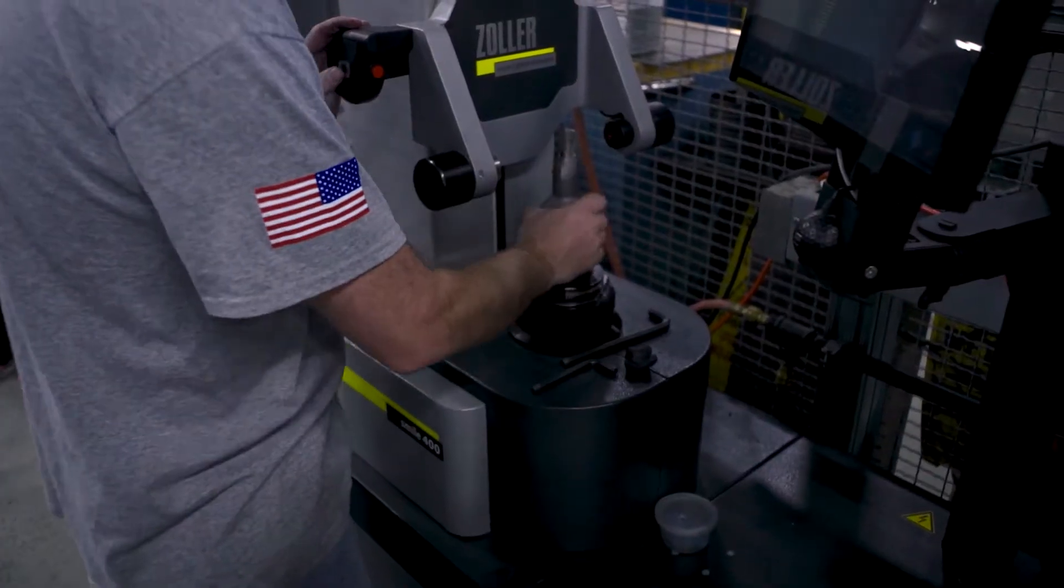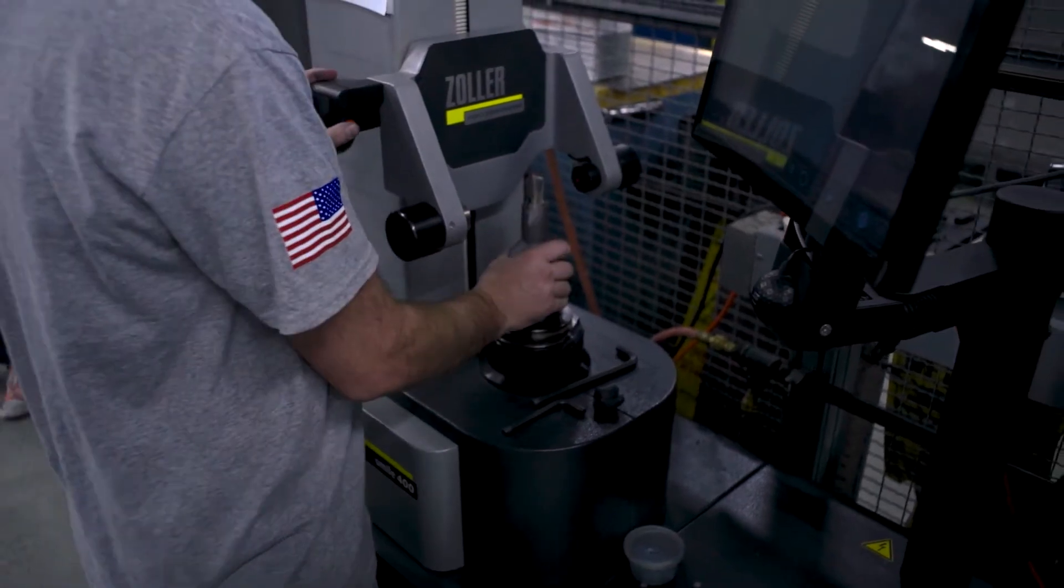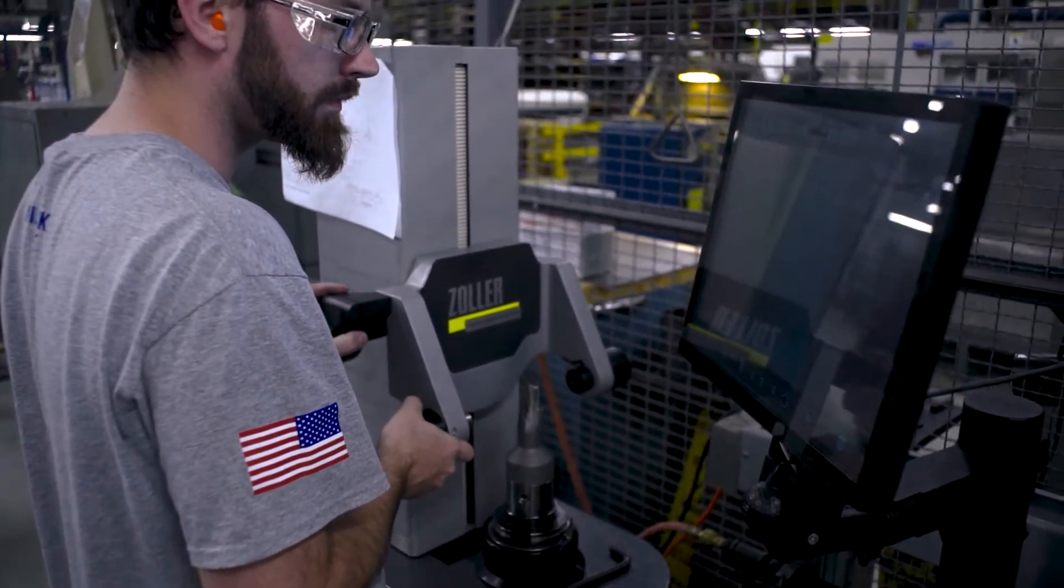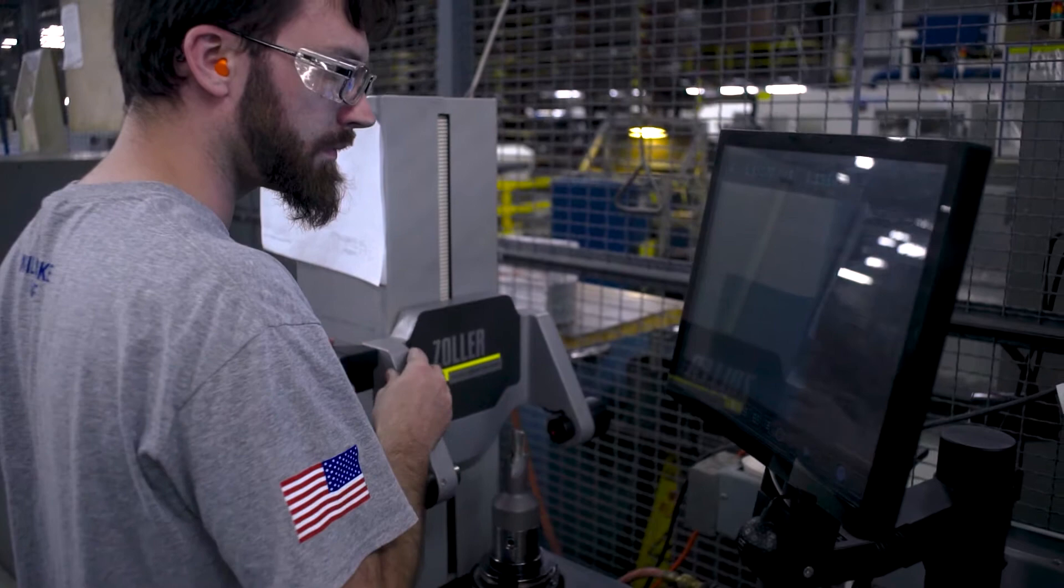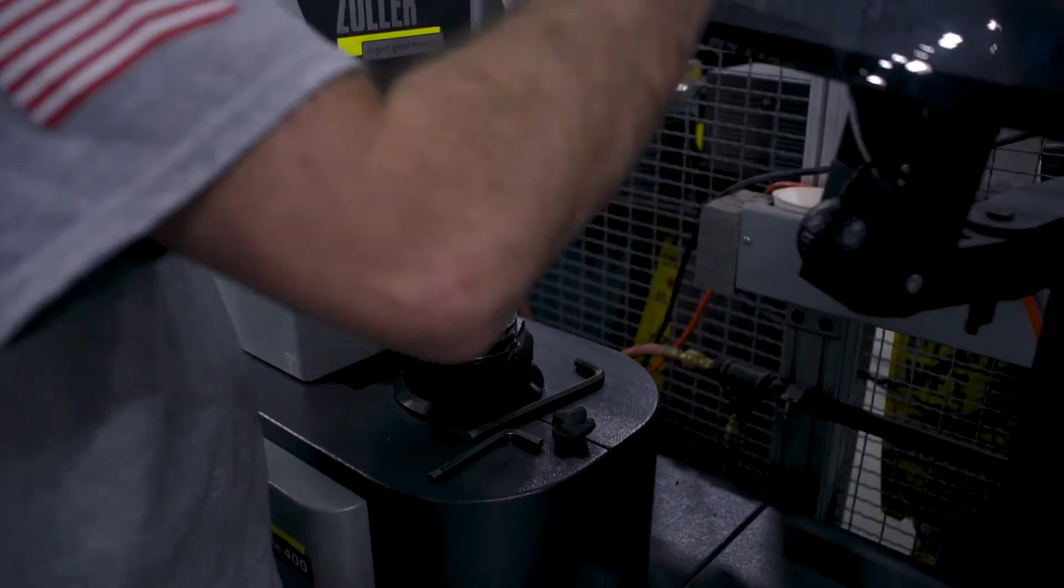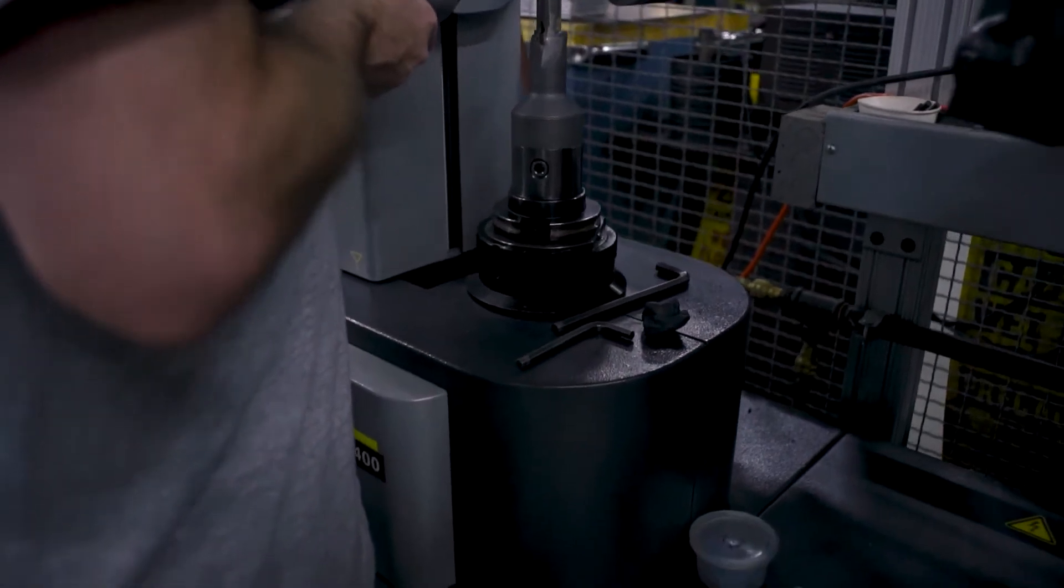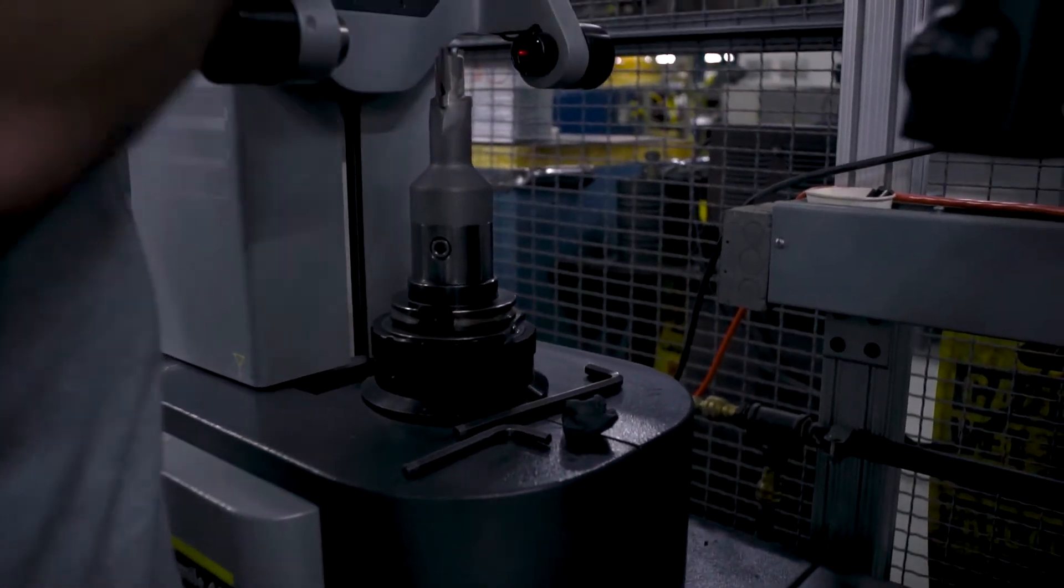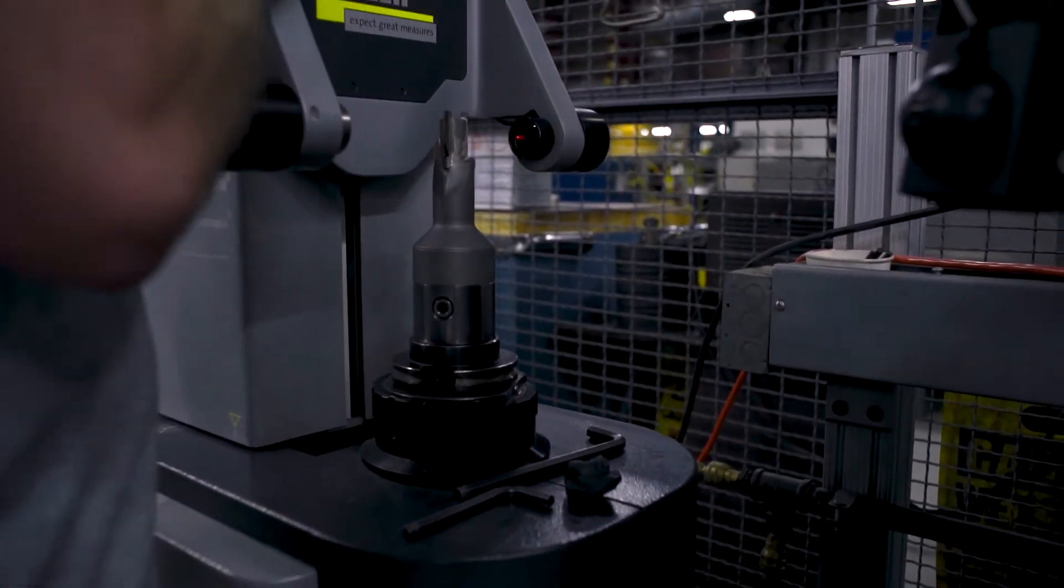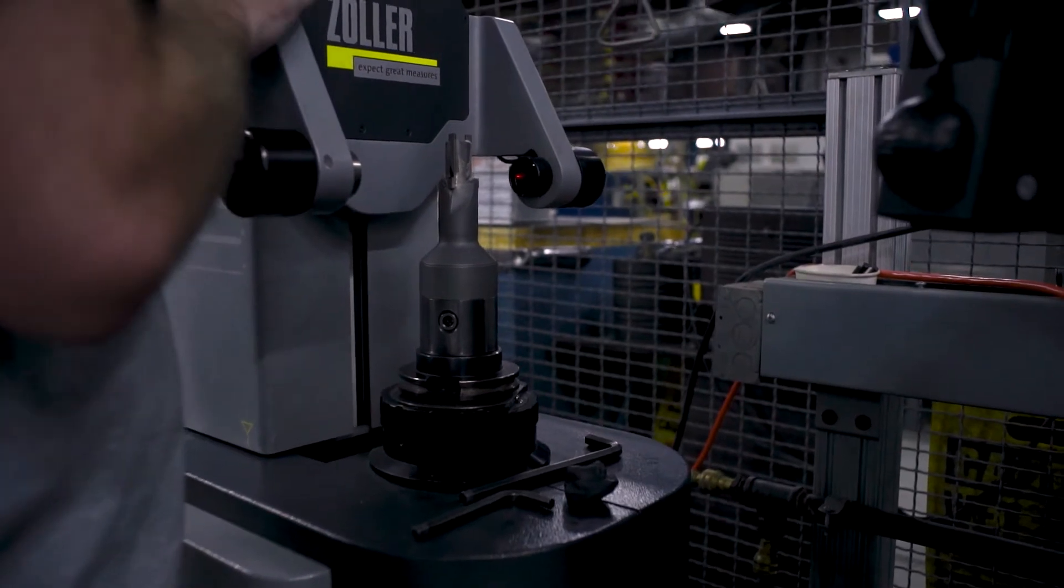So this inspection machine allows us to check runout and dimensions on our cutting tools. We can also use it to preset our tools for our CNC machines, but in this case we're using it in our tool room to actually check the dimensions of our finished tool that we made, or in-process tool that we're making, so that it can cut our parts precisely.